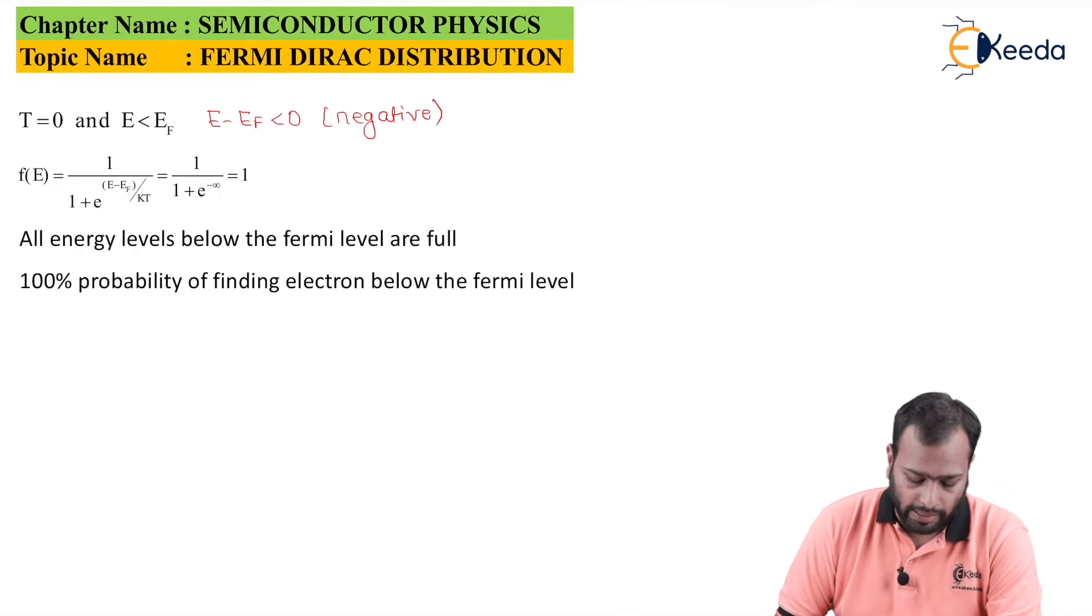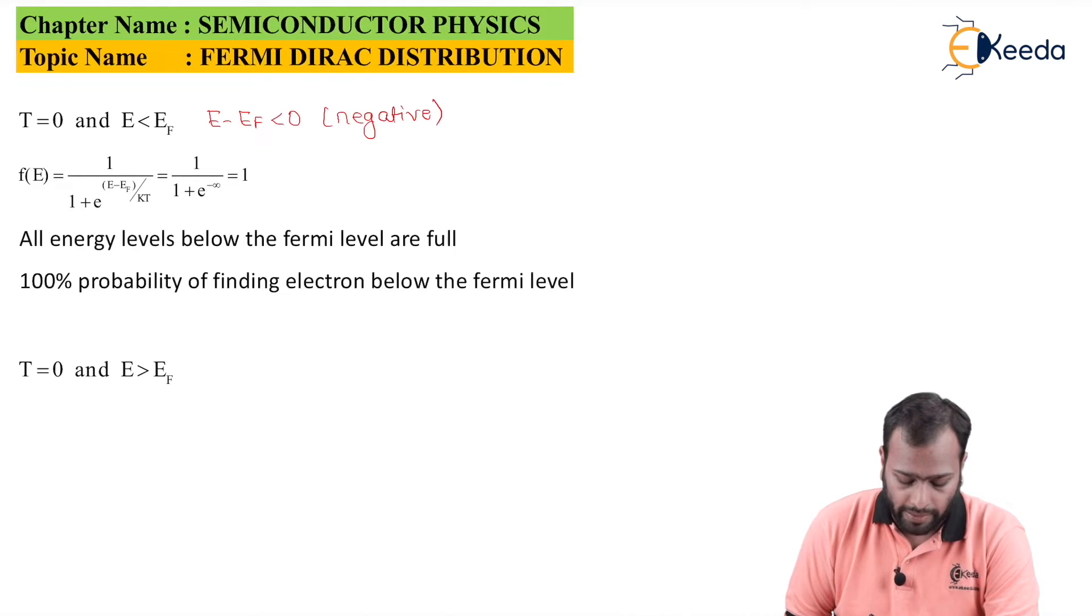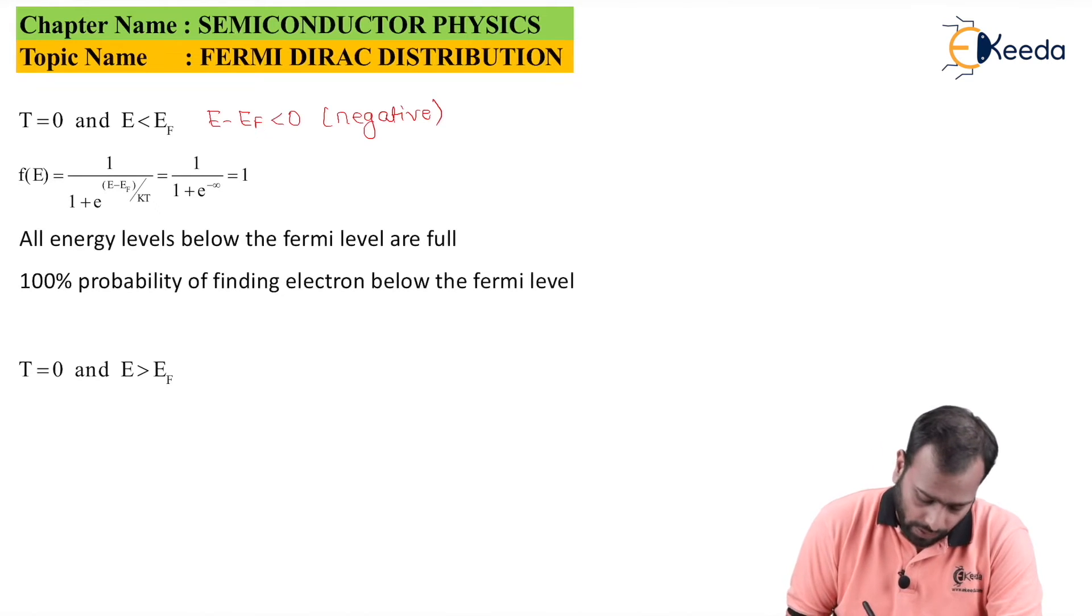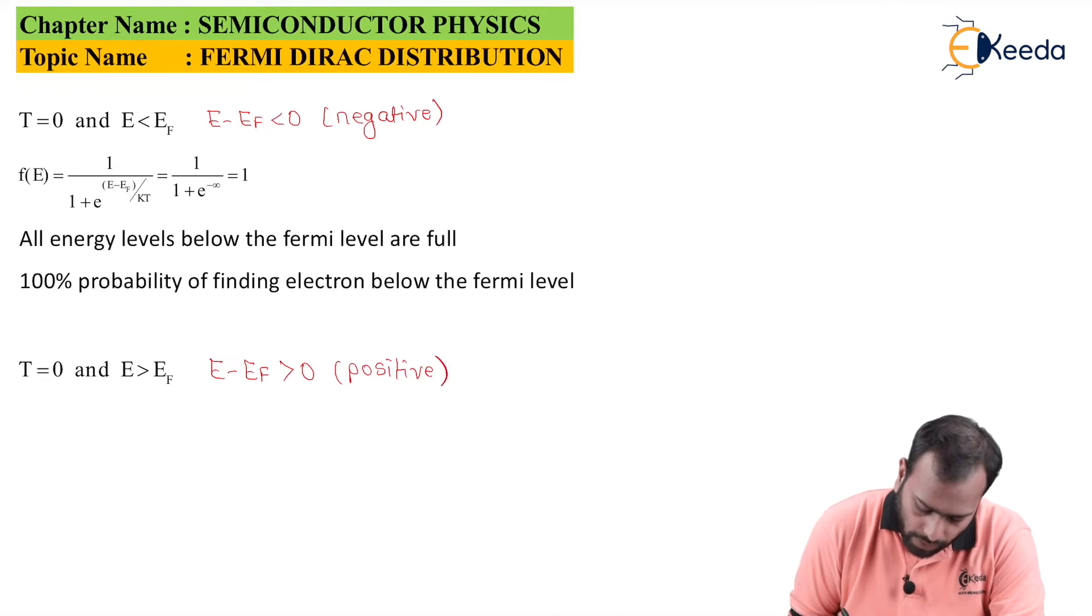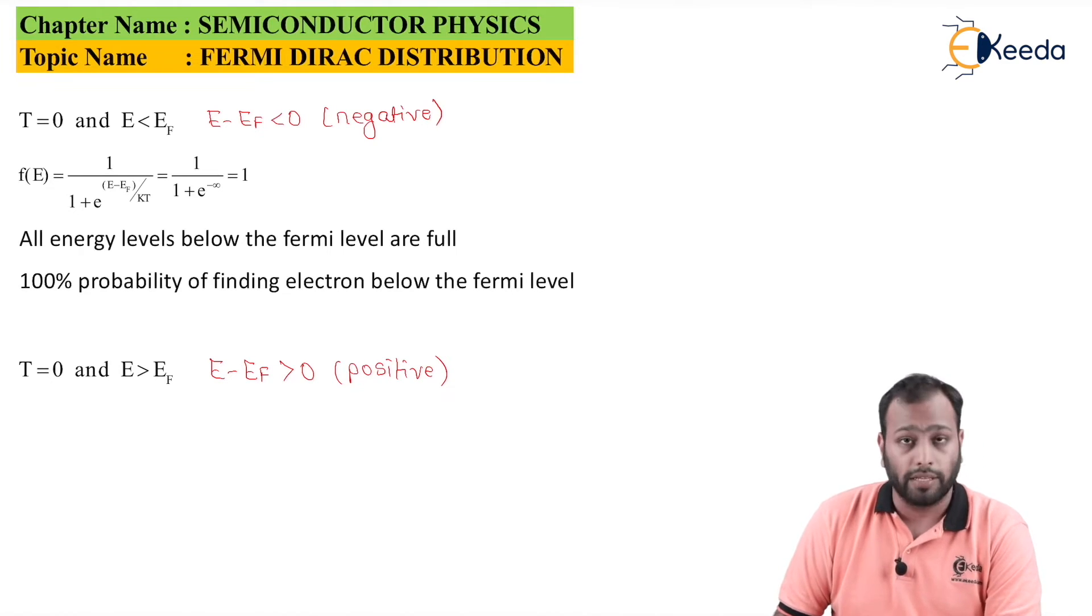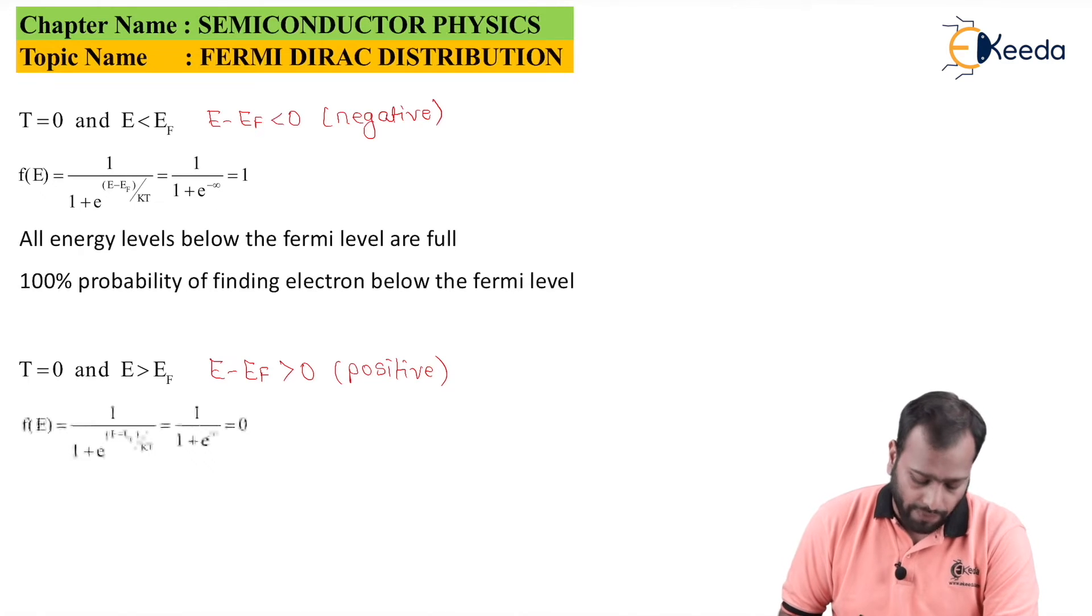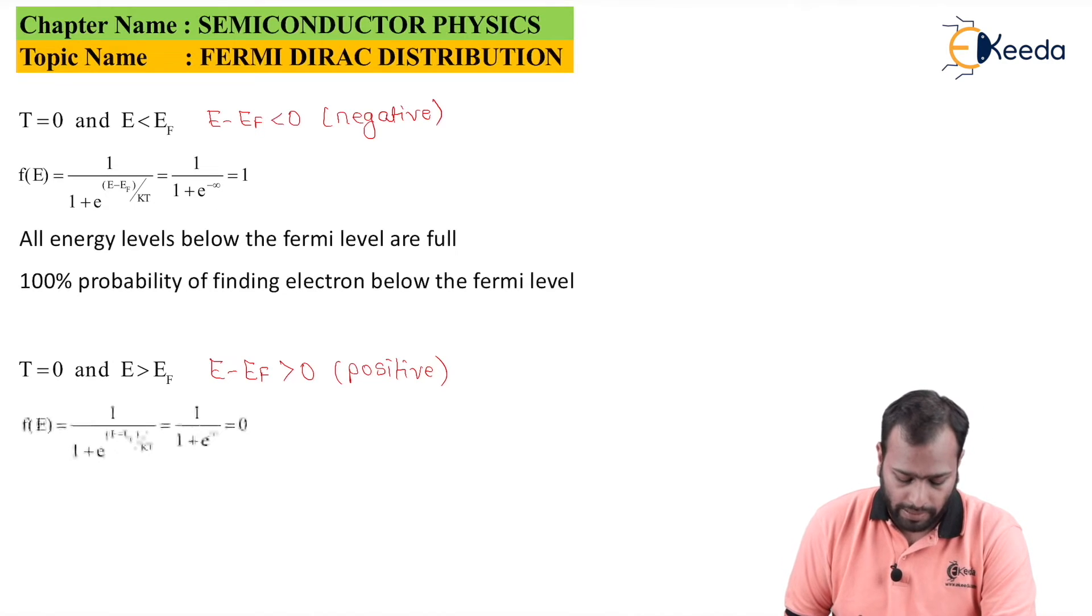Now, let's take a reverse case when T is equal to 0 but now E is greater than EF. It means now I am concerned with that energy level which is above the Fermi level. Here I can say my E minus EF value is greater than 0, which is nothing but a positive quantity. Again plugging these values, we will be having F(E) is equal to 1 upon 1 plus e raised to E minus EF divided by KT.